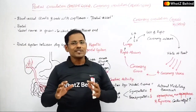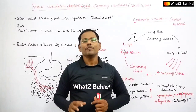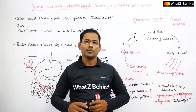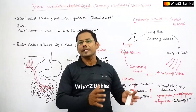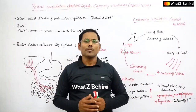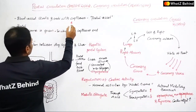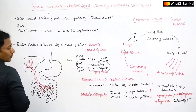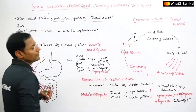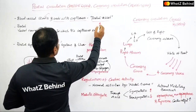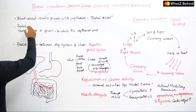In portal circulation, there is a separate blood vessel where blood flow starts from a capillary and ends in another capillary. That type of vein is called a portal vein. It is present in a special location in our body — specifically between the digestive system and the liver. That is where portal circulation exists.